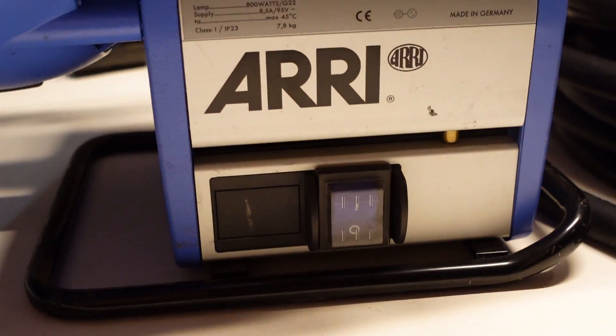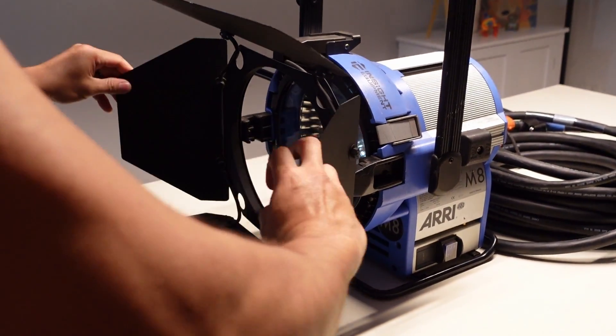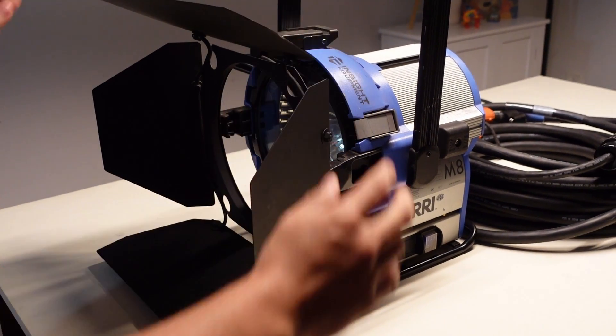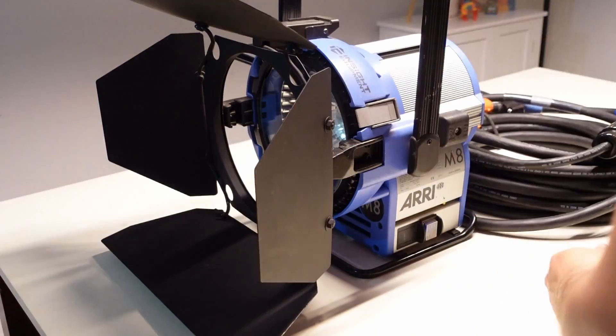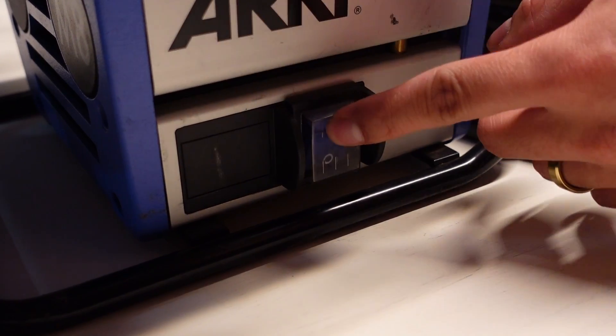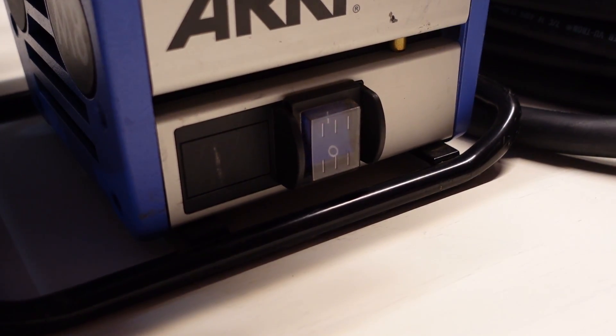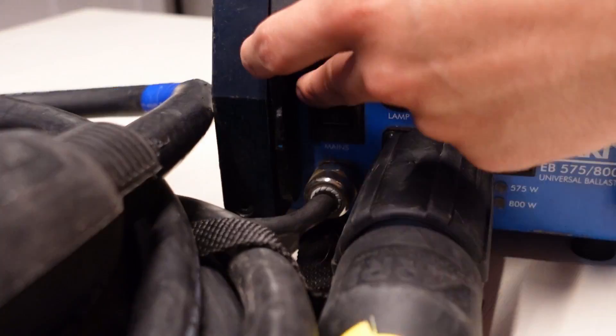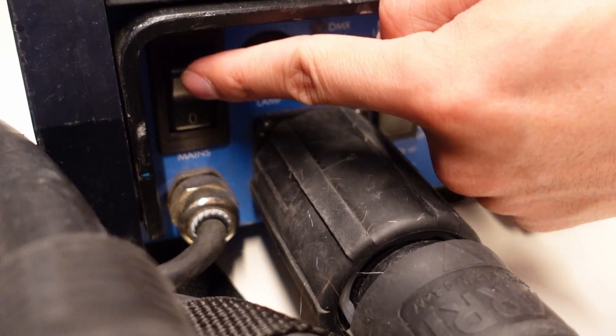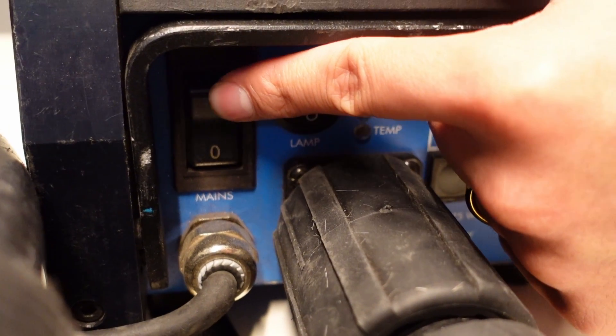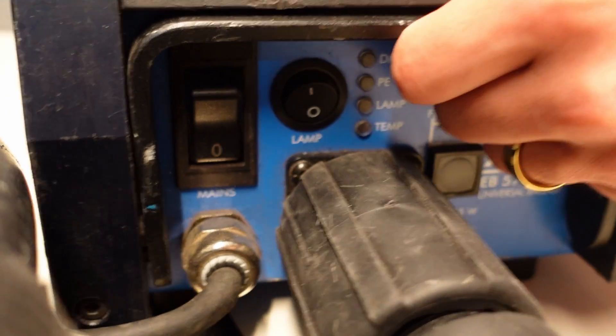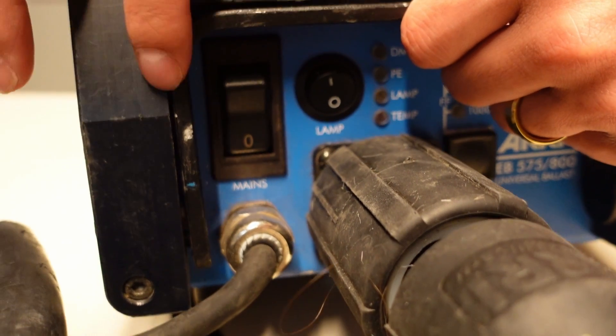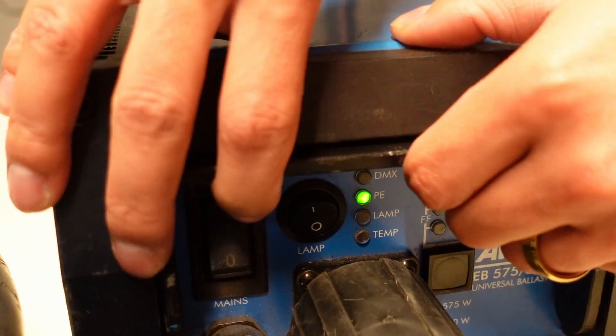Before you turn it on, I like to turn on the switch of the head. Because if you have the head on a stand and you put it up in the air, you won't be able to turn it on without turning that switch on, even if you turn on the ballast. So to turn on the ballast, you just want to turn on the ballast switch first. And then once the PE light is on, you want to turn on the lamp button.